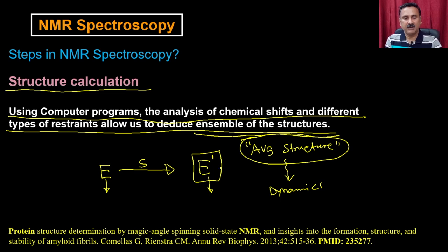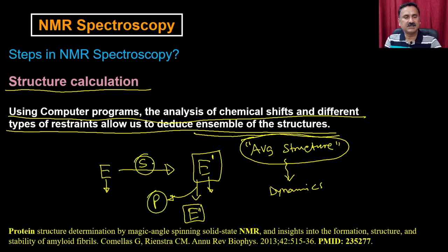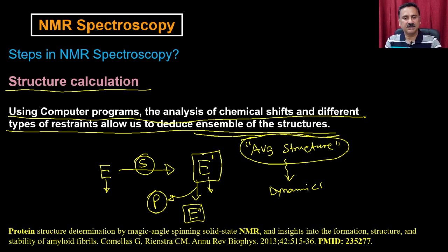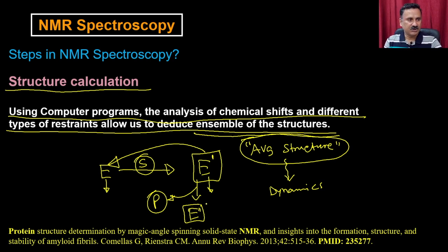Similarly, E-prime probably can go back to E, or it can actually go to E-double-prime when the product is actually going to be released. So NMR is a very robust technique to actually study all these events — where you can actually be able to see the conformational changes in the enzyme structures when the substrate is binding, and you can also be able to see the changes when the product is getting released, and whether it is going to adopt the original conformation or another conformation.